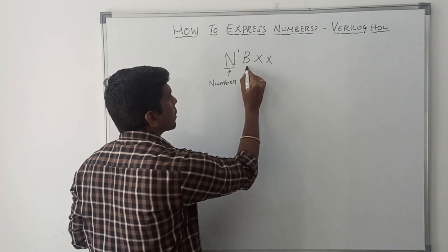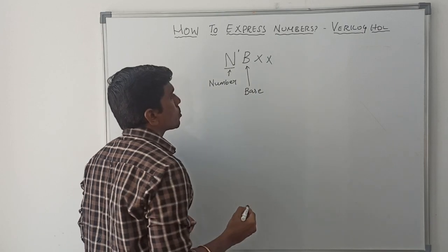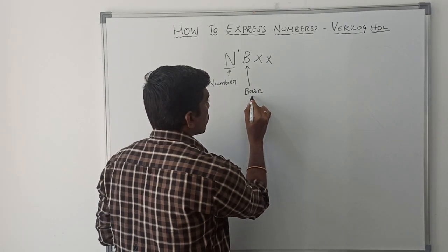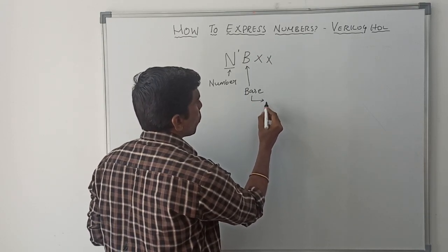This B represents base. Base is binary for the number system. We can classify the base into four types.